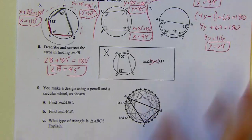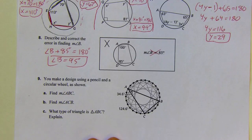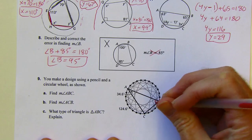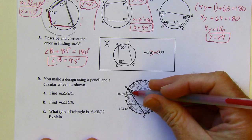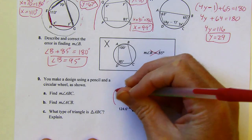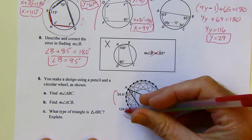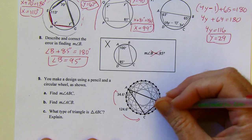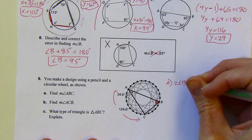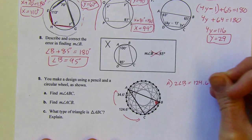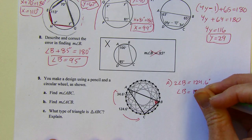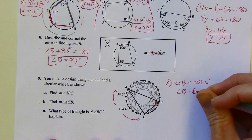All right, and the last problem. You make a design using a pencil and a circular wheel as shown. Find the measure of angle ABC. Angle ABC is right down here. So we've got 124.6 is the measure of this arc. I can take half of that. So 2 times angle B is going to equal 124.6 degrees. And then I divide by 2. That'd be 62.3 degrees.